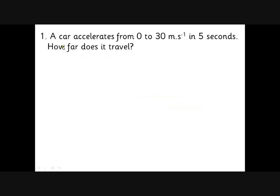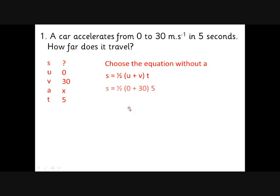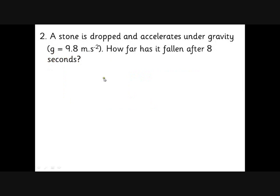Just a few examples to see if we can do them. A car goes from naught to 30 in 5 seconds, how far does it travel? Write down your SUVAT. S is the one we want to know this time. U is 0, V is 30, don't know about acceleration, don't want to know. Time is 5 seconds, so we're looking for the equation without A in it. The equation without A is a half times U plus V times T. A half times naught plus 30 times 5 equals 75 metres.